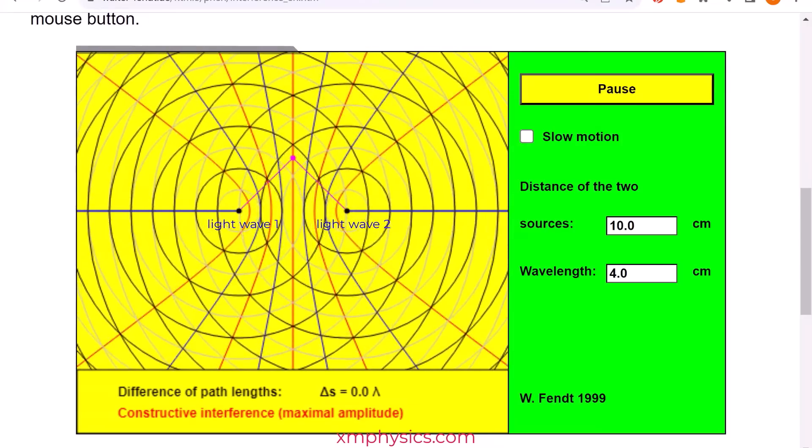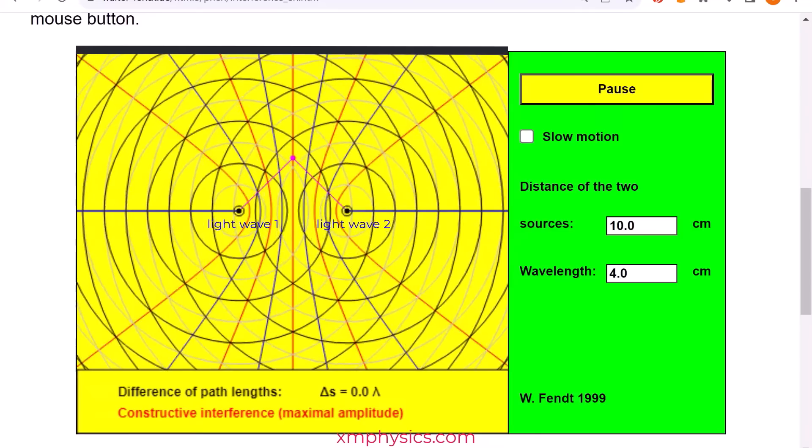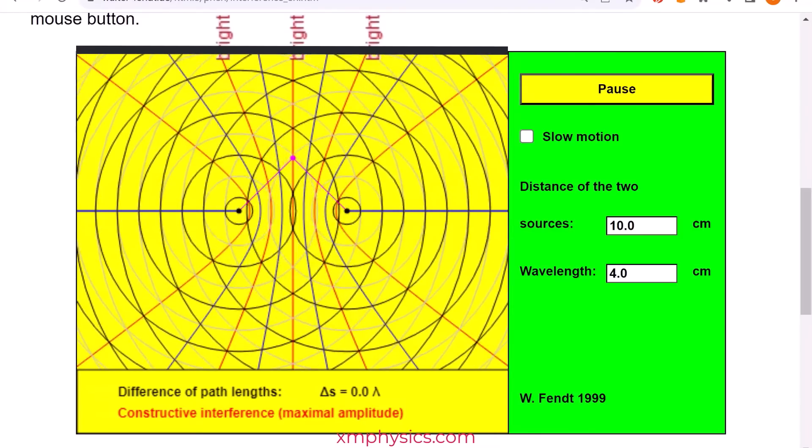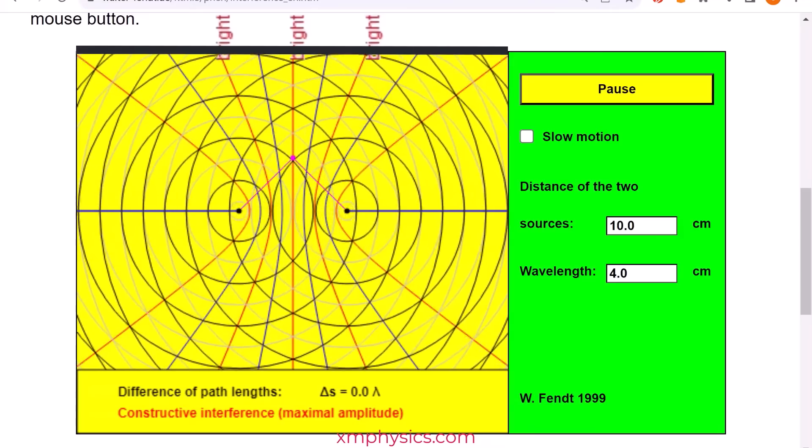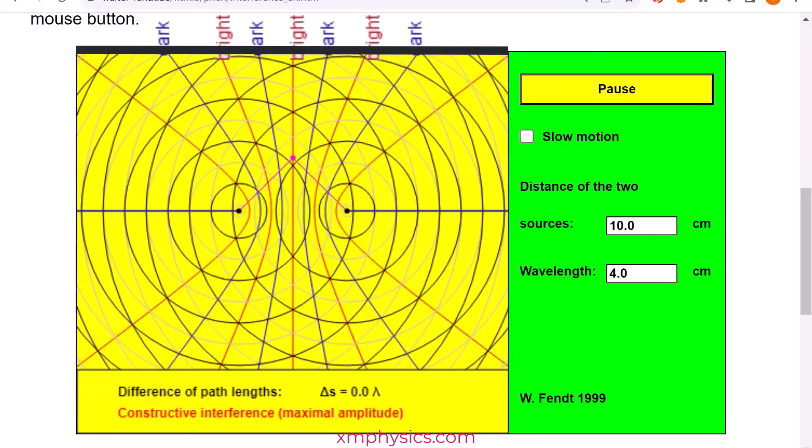If we put a screen here, then at positions where we used to have the antinodal lines, the red lines here, we are going to see bright fringes. And at the positions where we used to have the nodal lines, the blue lines here, we are going to see dark fringes.